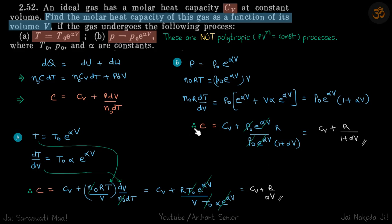So C becomes Cv plus pressure dV by dT, and pressure is simply this. So we'll just directly put the value of P₀e^(αV) in place of P. So P into dV by dT, we just do that and get our answer.